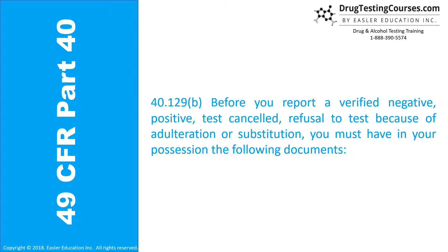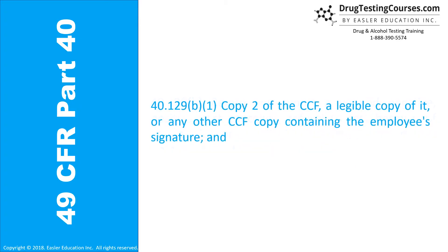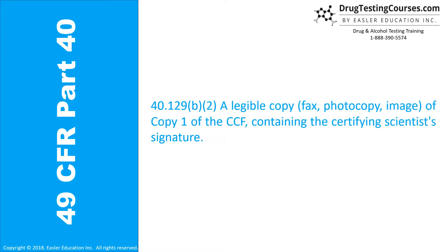40.129(b): Before you report a verified negative, positive, cancelled, or refusal to test because of adulteration or substitution, you must have in your possession the following documents: Copy 2 of the CCF, a legible copy of it, or any other CCF copy containing the employee's signature; and a legible copy — fax, photocopy, or image — of Copy 1 of the CCF containing the certifying scientist's signature.